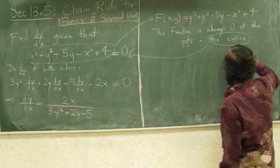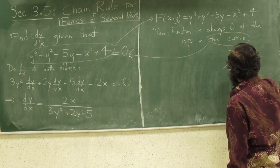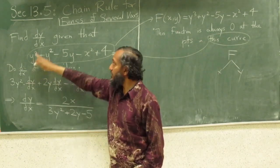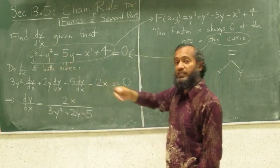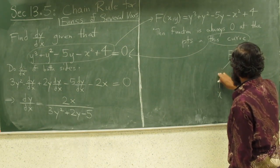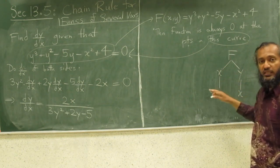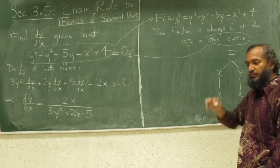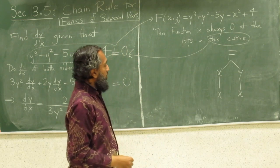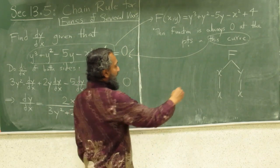So, now, let's try the tree diagram. F is a function of x and y, and since I'm interested in dy dx, I can think of y as a function of x, and x is a function of x, obviously, it's the same, actually. Doesn't matter, I apologize if I write the y as a function of x, and x is a function of x.